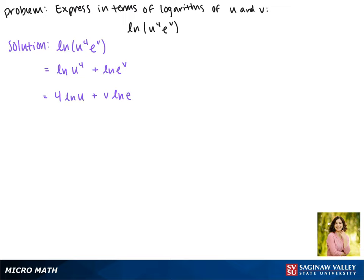Since the base of the natural log is e, the natural log of e is equal to 1. Simplifying this gives us 4 times the natural log of u plus v. And this is as simplified as we can make it.